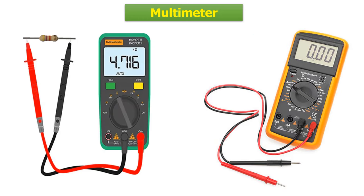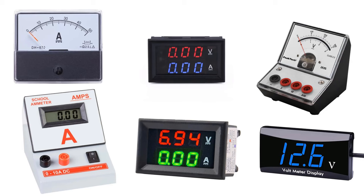We can also measure diodes, transistors, and frequency. Since there are many types, it is also possible to make other measurements according to their characteristics. In addition to these multimeters with many functions, there are also measuring instruments that measure only voltage and current separately and together. Analog and digital types are also widely used.